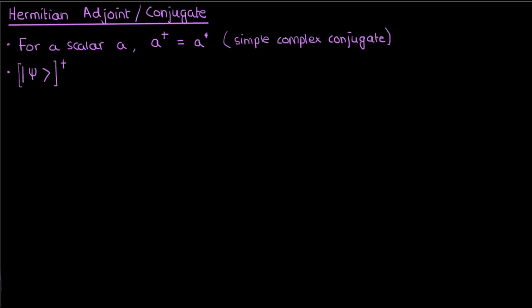For a ket vector, however, the Hermitian conjugate is just the corresponding bra. And for a bra, the Hermitian conjugate is just the corresponding ket.